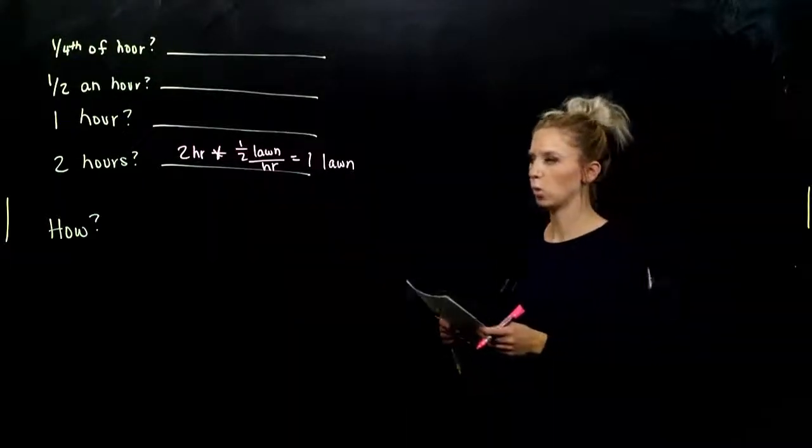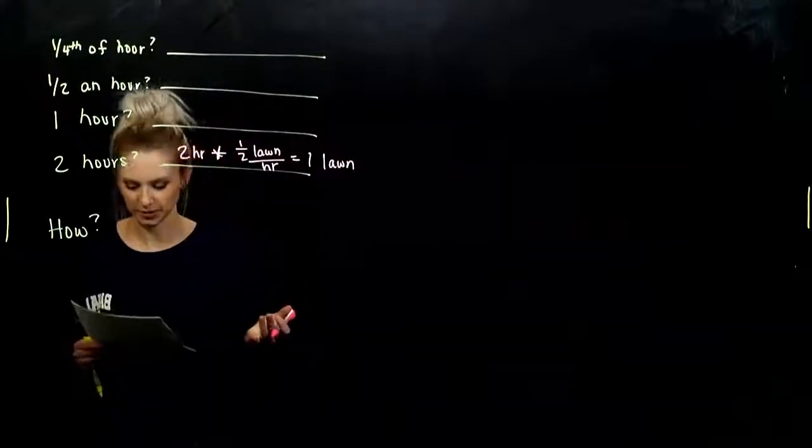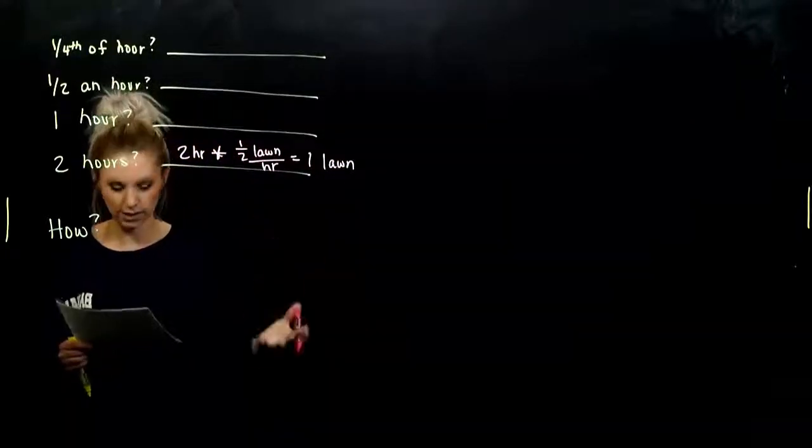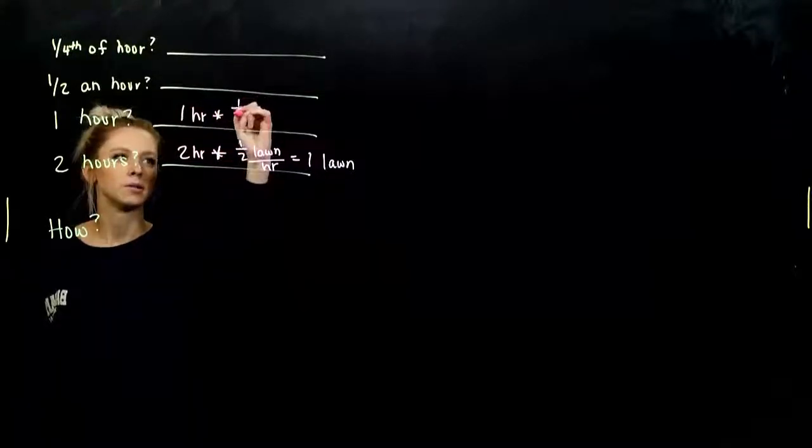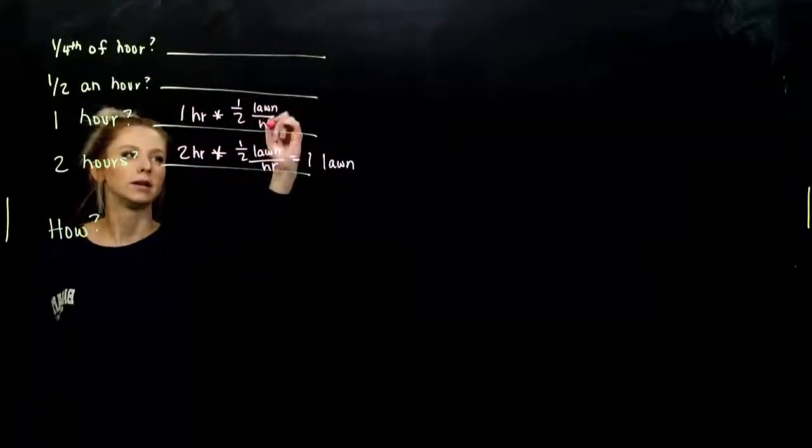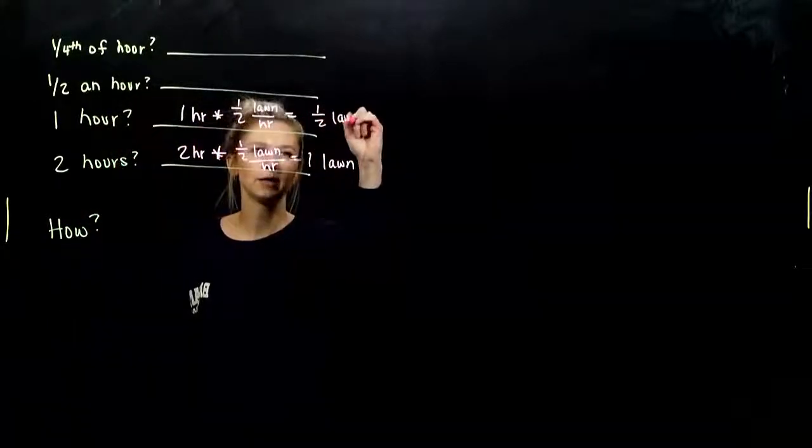What about if I work for one hour? It's given to us, basically. I can mow half of the lawn in one hour. So, one hour times my rate—I can do half of a lawn in an hour—I'm going to be left with half of my lawn done.